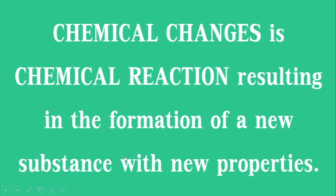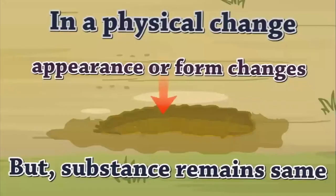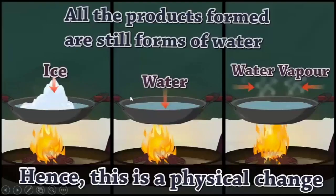In a physical change, appearance or form changes but the substance remains the same. Here we have a sand castle — an elephant smashed it and its form changed, but it's still sand. Similarly, ice melts to water, then evaporates to water vapor — these are all physical changes because it's the same substance, water. We only change the state of matter. A broken plate is still parts of a plate, so that's a physical change too.